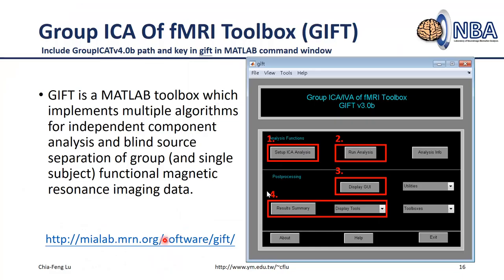This is the main GIFT interface. It includes several different panels. The first is the analysis function panel, which has three buttons: 'Setup ICA Analysis', 'Run Analysis', and 'Display'. For the first button, you set up parameters including file paths, number of components, and which ICA algorithm to use.